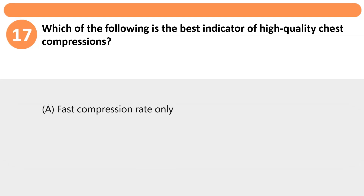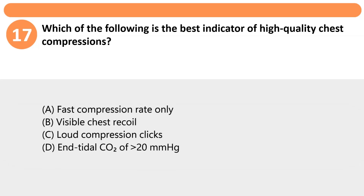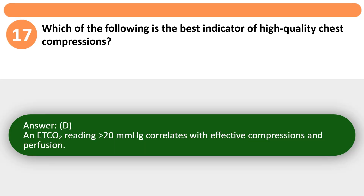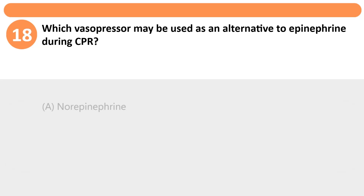Which of the following is the best indicator of high-quality chest compressions? A. Fast compression rate only. B. Visible chest recoil. C. Loud compression clicks. D. End-tidal CO2 greater than 20 mmHg. Answer: D. An ETCO2 reading greater than 20 mmHg correlates with effective compressions and perfusion.